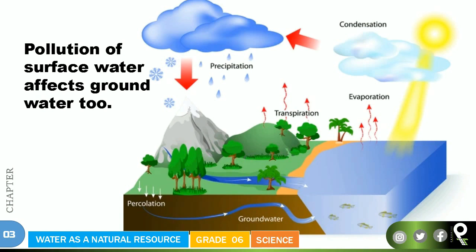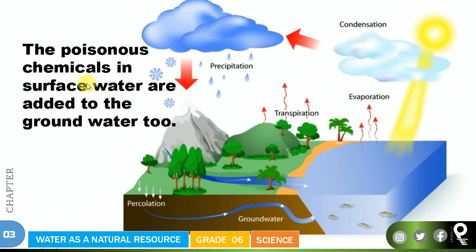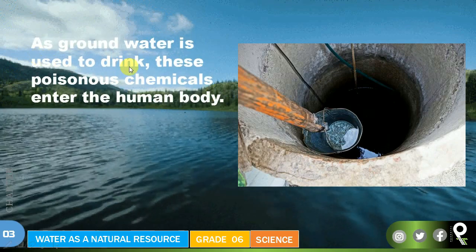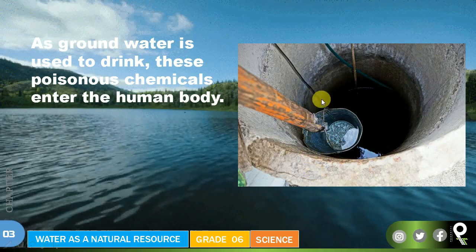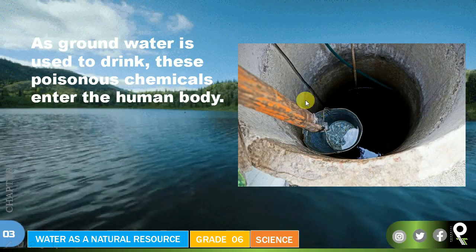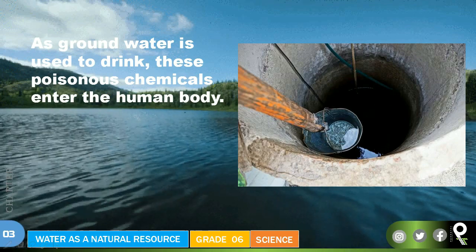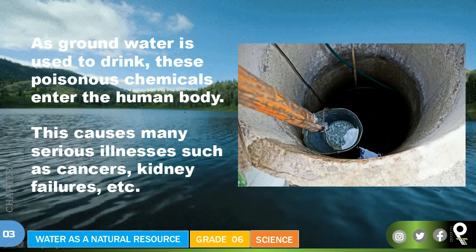Pollution of surface water also affects groundwater, because surface water and groundwater are connected. When people draw groundwater, it will be contaminated — the poisonous chemicals in the surface water are added to the groundwater as well. When a well is used as a source of drinking water, those poisonous chemicals enter the human body. If you add chemicals to streams, those streams also get polluted.